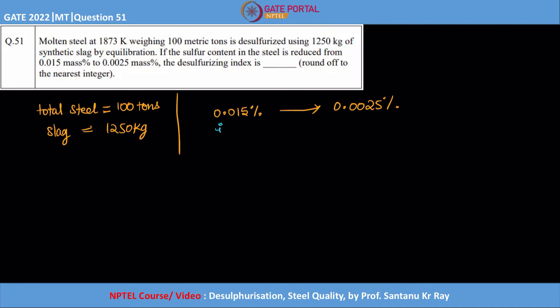So now these are the percentages, so let us try to calculate the absolute quantities. We know that we have 100 tons and out of 100 tons, 0.015 into 100, so this is equal to 0.015 tons, this is the initial sulfur. Similarly final sulfur would be 0.0025 by 100 into 100.